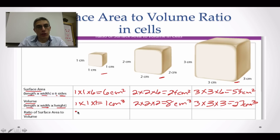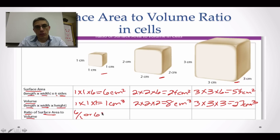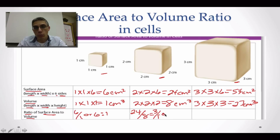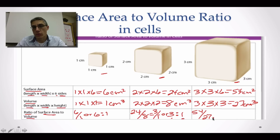Now we're going to look at the ratio between surface area and volume. For the first cube, we have 6 units of surface area to 1 unit of volume — a 6 to 1 ratio. For the second cube, we have 24 units of surface area to 8 units of volume, which reduces to a 3 to 1 ratio. For the third cube, we have 54 units of surface area to 27 units of volume, which reduces to a 2 to 1 ratio.